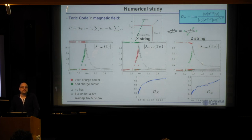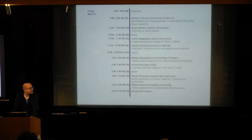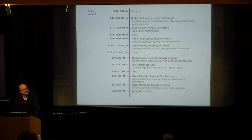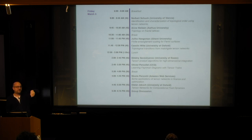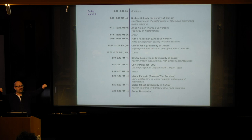In answer to a question: the order parameter works for any perturbation — no assumption was made on the form of the perturbation. For a PEPS practitioner, the more efficient numerical approach is the second generalization: push operators to the virtual level at the fixed point, then measure at the virtual level even away from the fixed point. This is inherently a PEPS construction — you can't measure virtual-level strings experimentally, but it provides useful information in simulations with access to more quantities than the physical-level approach.